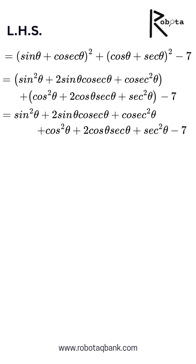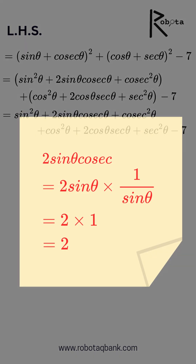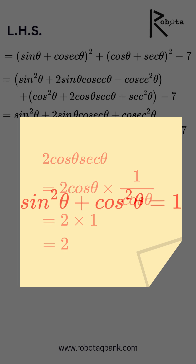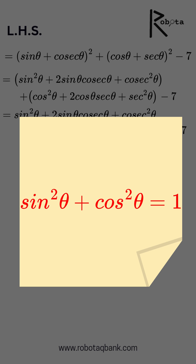Let's simplify the products. sinθ·cosecθ equals 1, so 2 times that is 2. Similarly, cosθ·secθ is also 1, so 2 times that is again 2. Now observe that sin²θ + cos²θ equals 1.